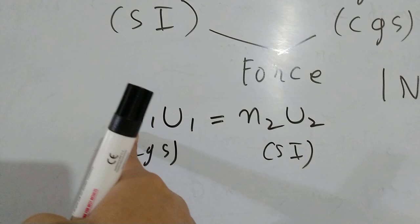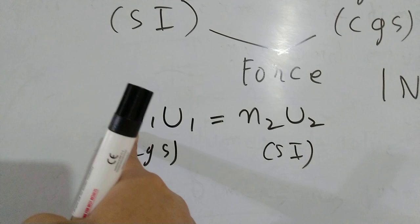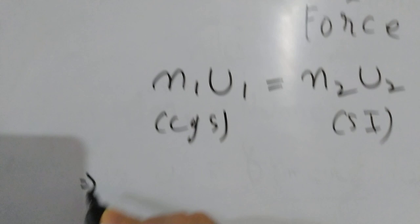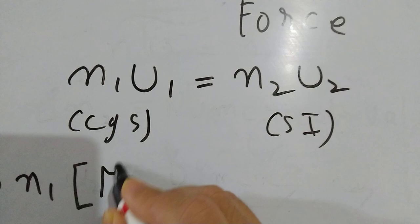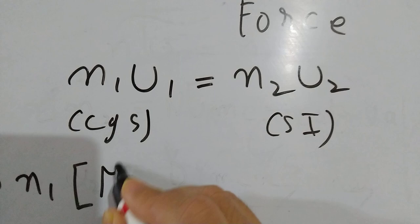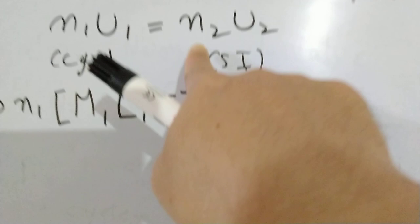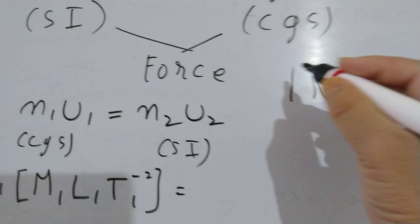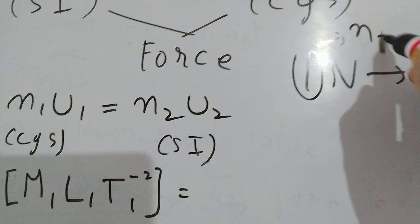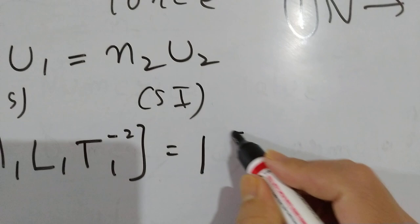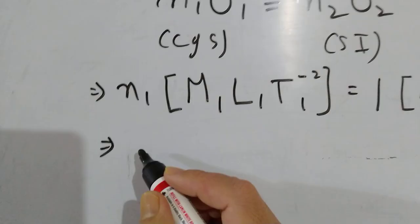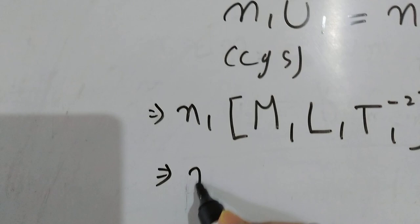So this is the value of N1. U1 and U2 represent the dimensional formula for force, which is M L T^(-2). So N2 — the numerical value — is derived from the dimensional formula: M1 L1 T1^(-2) for the first system and M2 L2 T2^(-2) for the second system.